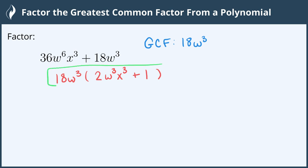So this right here is our greatest common factor factored out of this polynomial, and we can always check this by doing the distributive property. So we can multiply the 18w cubed into both terms just to check.